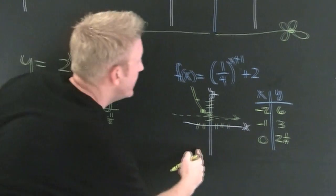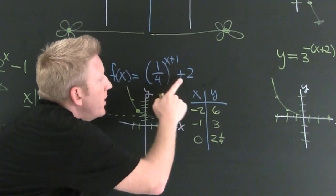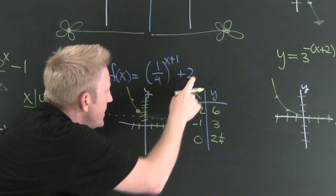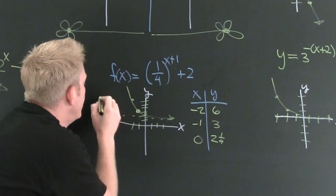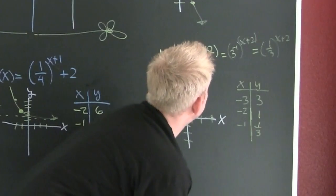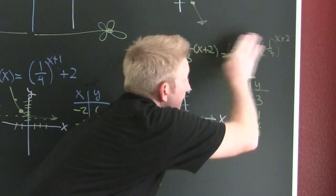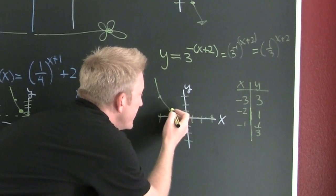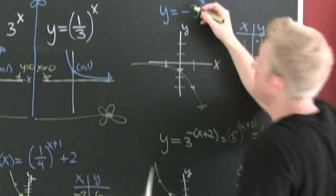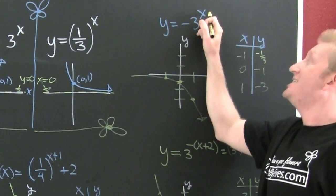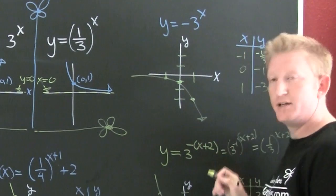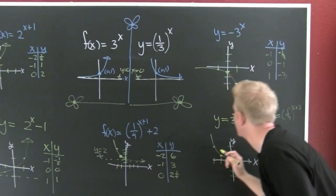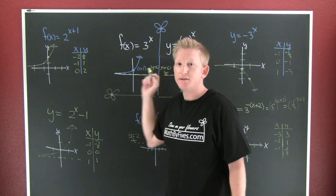Putting it all together: we choose the basic shape, then apply the shifts — left one and up two means the special point moves left one and up two, and the asymptote also shifts up to Y = 2. In another example we first rewrote it into a familiar form — downward sloping shifted left two. And in the last case we just applied the flip with no horizontal or vertical shift. That brings everything full circle.